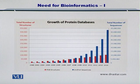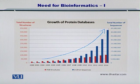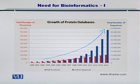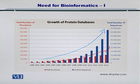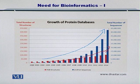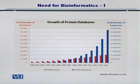Another example is the growth of protein databases. As shown here in this graph, the blue bars represent the number of protein sequences — of course they are in millions — but if you look at the red bars, these are the protein structures. So the protein sequences and the protein structures, both of them are growing at a very rapid pace. We need to utilize this data and understand how these proteins function within a cell. This is the job of a bioinformatician, and therefore we have a very nice opportunity with us.